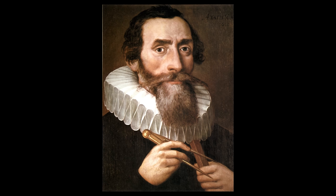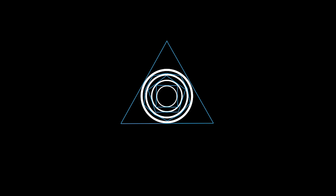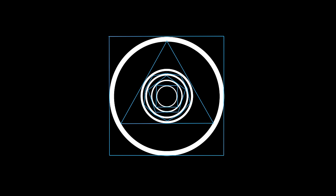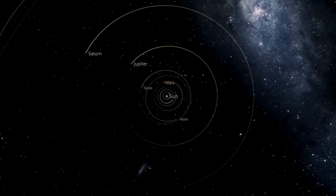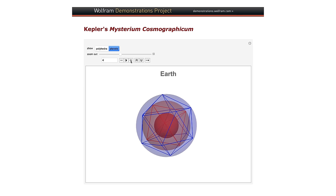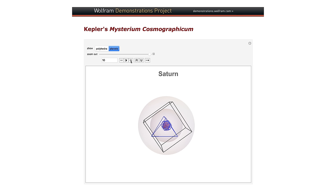He found that if you inscribed a sphere inside an octahedron, circumscribed a sphere around that, placed the whole thing inside an icosahedron, circumscribed a sphere around that, put the whole thing inside a dodecahedron, threw in another sphere, put the whole thing in a tetrahedron, another sphere, and then put the whole thing in a cube, surrounded by yet another sphere, you would have yourself six spheres. At the time, there were six known planets. And the ratios between the radii of these six spheres matched the distances of those six known planets from the Sun. Mercury, Venus, Earth, Mars, Jupiter, and Saturn all explained with the beauty of regular polytopes.